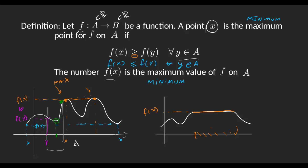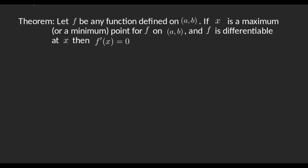So once we have understood the definition of a maximum and a minimum, let's see a theorem. We have a function defined on an open interval a, b, and a number x is the maximum or the minimum point of f. If f is differentiable at x, then f prime is equal to 0.